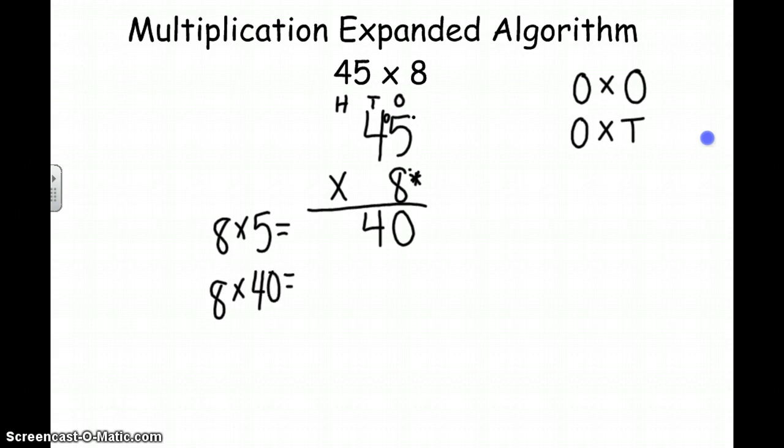And remember the quick little trick, we can cross out the 0, put it in the back, and then we have 8 times 4, which is 32. And our 3 is going to go in our hundreds place, and our 2 is going to go in the tens place. 8 times 40 is 320.